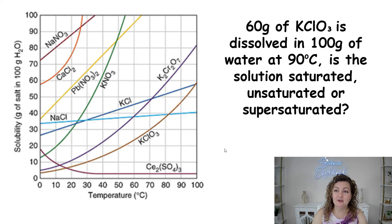60 grams of KClO3 is dissolved in 100 grams of water at 90 degrees Celsius. Is the solution saturated, unsaturated, or supersaturated? Pause and I'll show you the answer in a second.